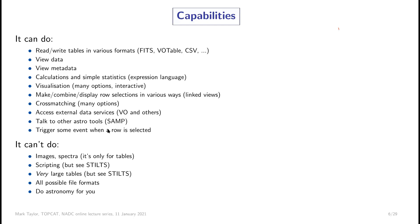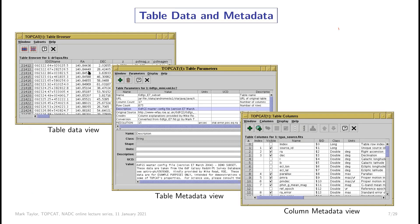The most basic thing TOPCAT can do is look at table data and metadata. When you load a table, you can scroll through rows and columns and see the values, but you can also look at the metadata. This is especially important when looking at a table downloaded from an external catalogue service that may have hundreds of columns — the Table Columns window will tell you not only the column names but also the units and a human-readable description of what those columns are.